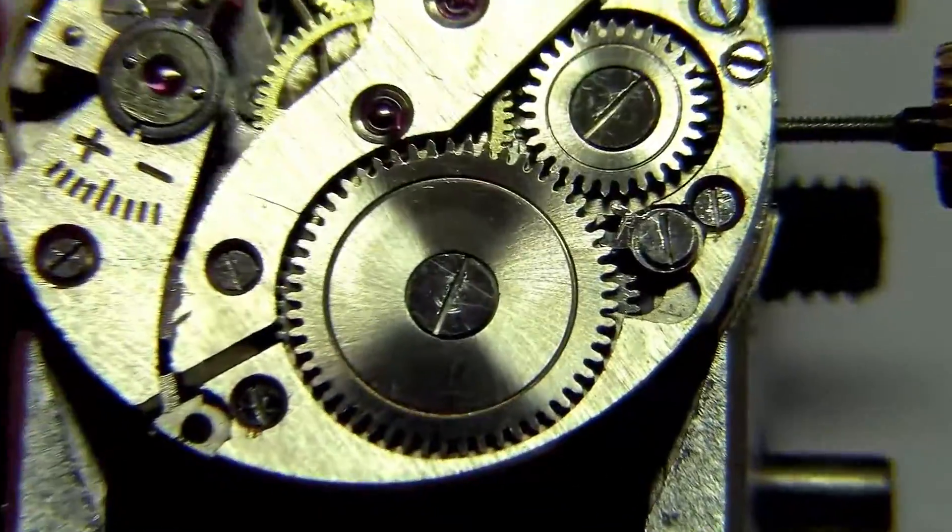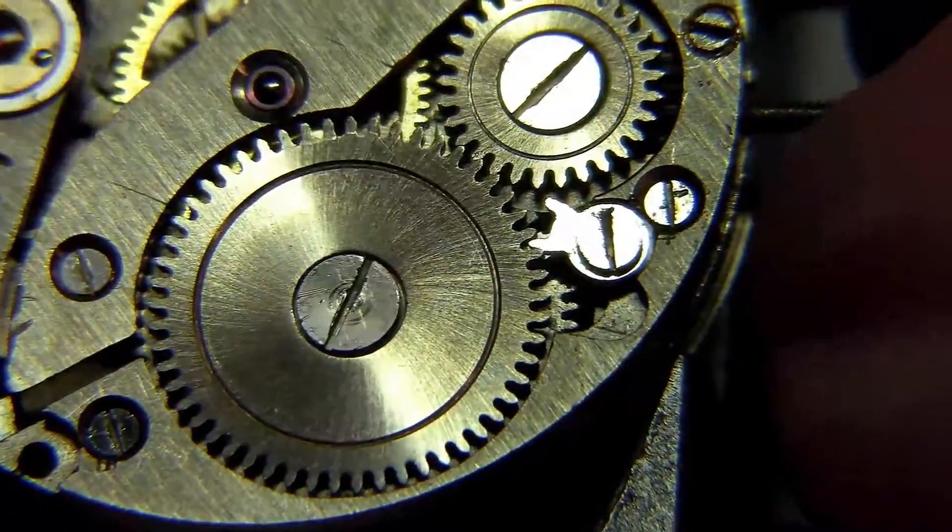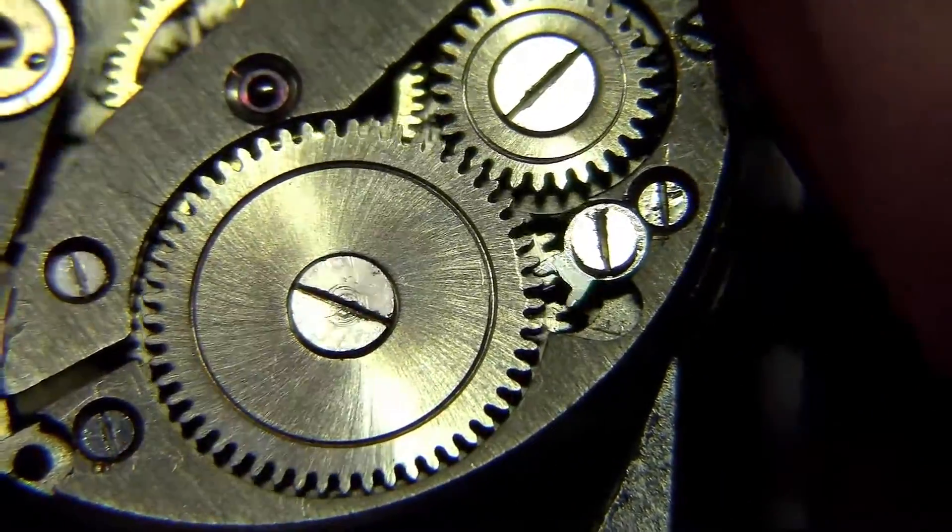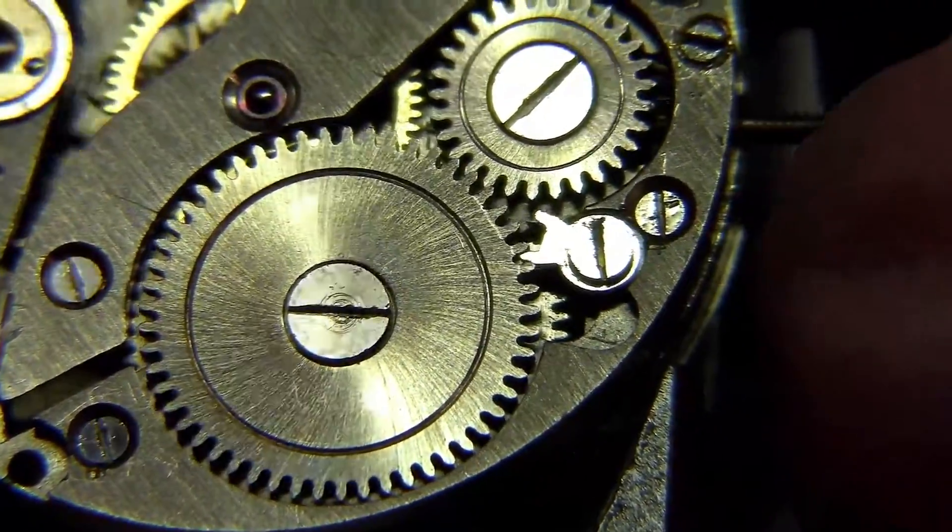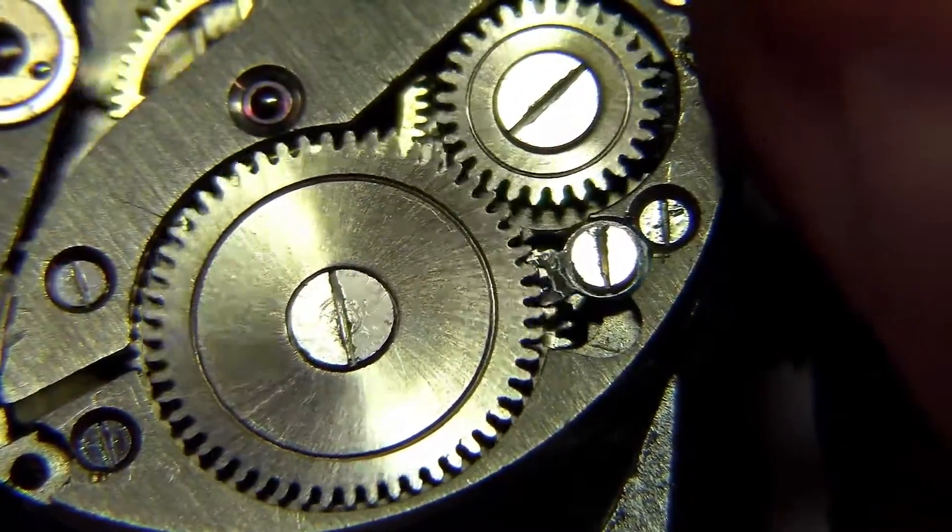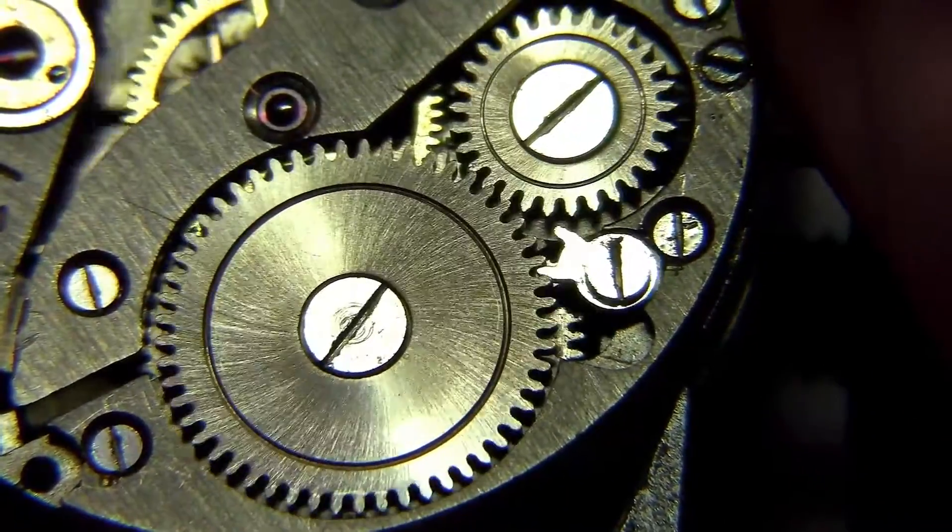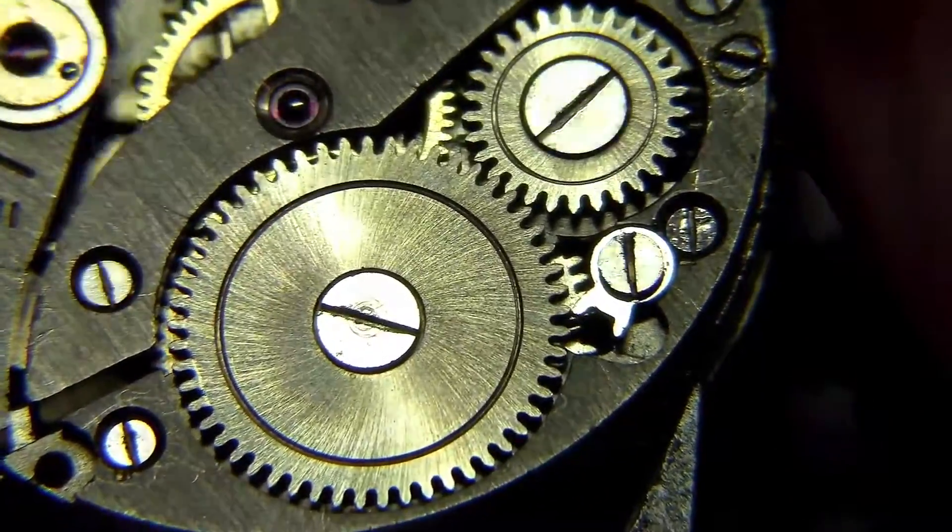You have this small part here that we call the click. This is actually what makes the ratchet work and move only in one direction by blocking when it tries to move in the opposite direction.